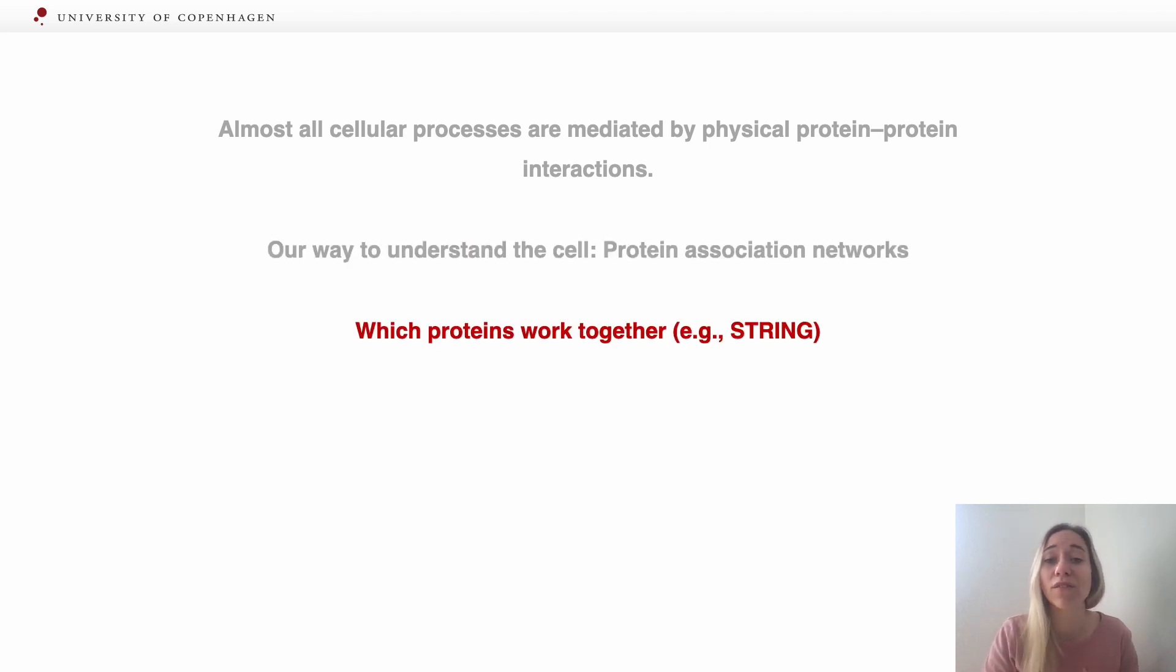That's why we have networks like the STRING network to tell us which proteins work together. STRING database offers links between proteins derived from multiple different sources, including text mining on the whole scientific literature or the database of interaction experiments and others.